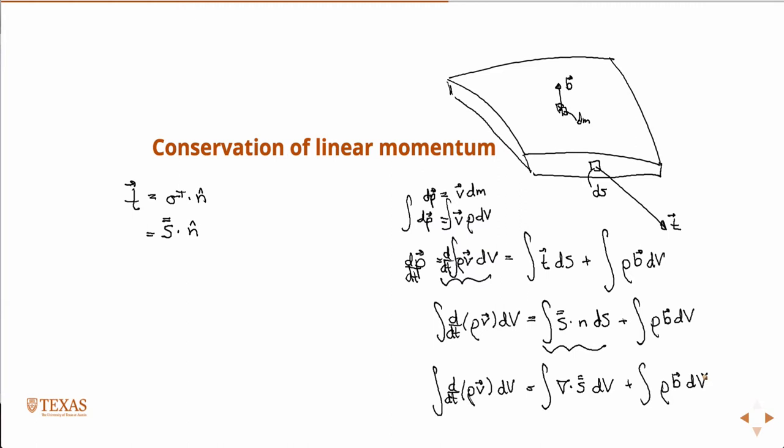So we've replaced, the divergence theorem allowed us to make that conversion from the surface integral to the volume integral. Now notice all of our terms are volume integrals. And this differential volume must be arbitrary. So if this holds for any arbitrary volume, then the integrands must also be equal. In other words, I can pull what's in the integrands out of that expression. So the final equation is DDT rho V is equal to the divergence of stress plus rho B. Conservation of linear momentum.